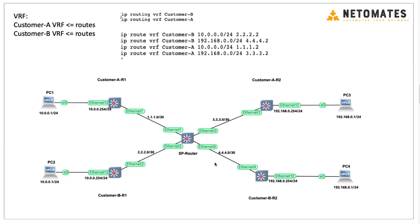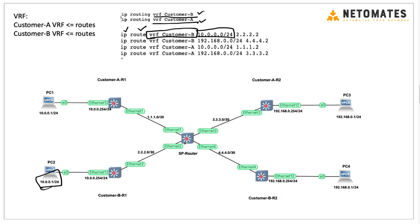Now let's add the routing. The first step is enabling routing within each VRF, similar to enabling routing on the default VRF but specifying the VRF name. Then we add routes — the command structure is similar to normal static routes but we specify which VRF we are adding the route to: 'ip route vrf customer-B 10.x.x.x ...'. For Customer B's 10 network, we say the next hop is 2.2.2, which points to their interface. Similarly, routes are added for all other networks in the topology.